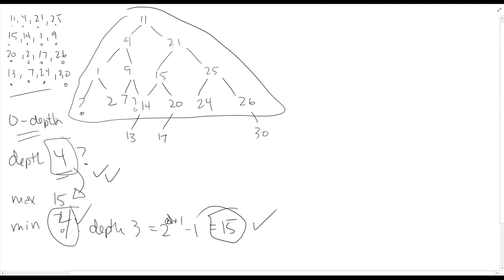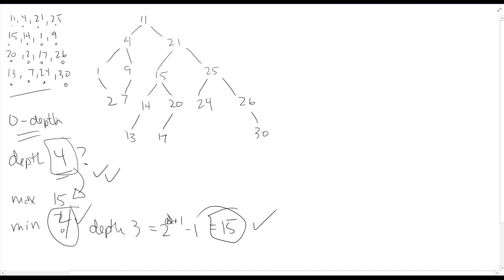What happens if we add these nodes in a different order? I'm going to go right to left, starting at the bottom of my list instead. This time we get 13 as the root — probably a decent node, though we already know this list is a little bit skewed toward the 20s. So starting at the bottom: 13, then to my left I'll put a 7, then 24, and a 30. Next up is 20: greater than, less than. Then 2: less than, less than.